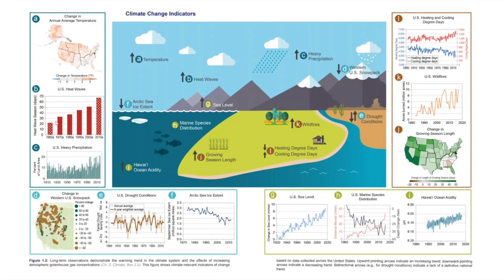So we have one graph which starts in 1960, another which starts in 1979, another which starts in 1920, and one more which starts in 1983. When you want to mislead people with statistics, picking your start date is very important.